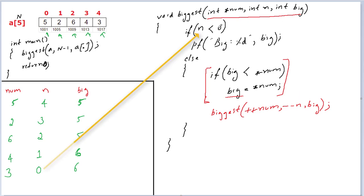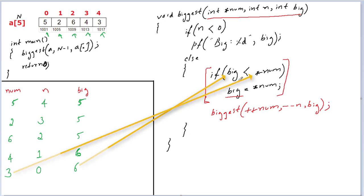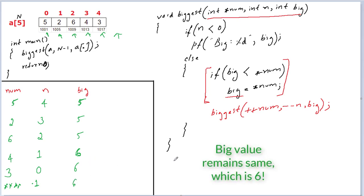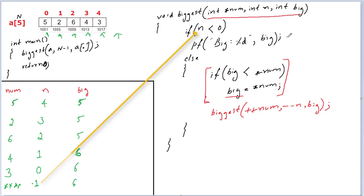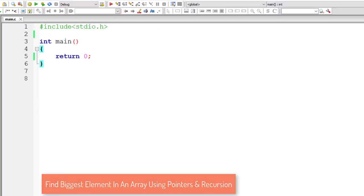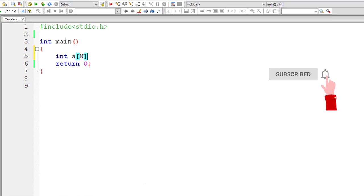Recursive call again: zero less than zero? False. Else block executes. Six less than three? False again. Recursive function called once more: plus-plus num now points to address 1017 plus four, some arbitrary value. Minus-minus n is zero minus one, which is minus one. Big remains six. Recursive call again: minus one is less than zero. Yes, true! So big is six, it gets printed. The function exits and prints 'biggest is six'.